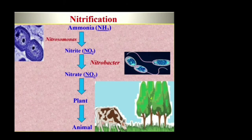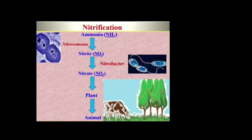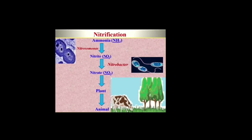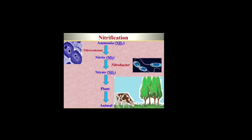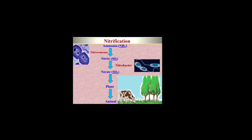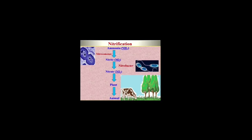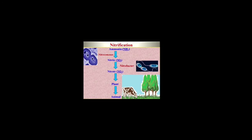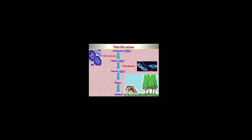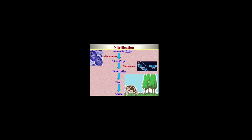Nitrification is the conversion of ammonium to nitrate, performed by soil-dwelling bacteria and other nitrifying bacteria. The process occurs in two steps. The first step is carried out by Nitrosomonas: ammonia in the presence of oxygen is converted into nitrite. The second step is carried out by Nitrobacter: nitrite in the presence of oxygen is converted into nitrate.